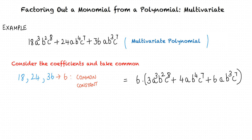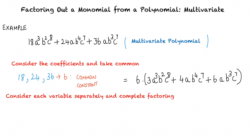After the first step, we have 6 times the quantity 3a cubed b squared c to the power 8 plus 4ab to the power 4 c to the power 7 plus 6ab cubed c to the power 7.